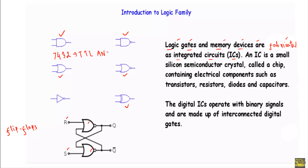If you ever work with this integrated circuit, you have to ensure that you are working with the correct IC. An integrated circuit is a small silicon semiconductor crystal, known as a chip. Inside that chip we will have various electrical components like transistors, resistors, diodes, and capacitors.